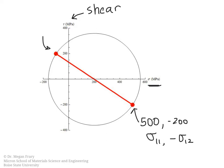The second point is at negative 100 on the normal stress axis and at positive 200, because this is sigma 21 and it produces a clockwise rotation. So we draw our two points, connect them, and find that the center falls at 200. We sweep out a circle, and this generates our Mohr's circle.